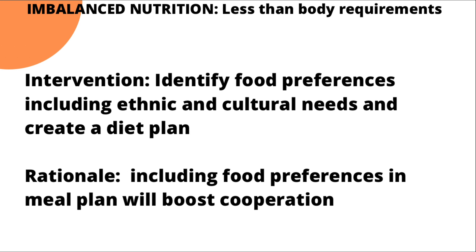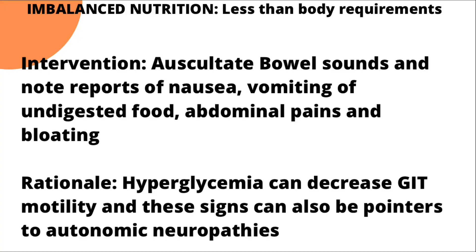Next, create a diet plan while identifying the patient's food preferences as well as their ethnic and cultural values. For example, chicken and fish are both protein sources, but if the patient's religion or personal preference means they don't eat fish, you substitute chicken. The rationale is that when food preferences are included in the meal plan, the patient is more likely to cooperate and actually eat what is prescribed.